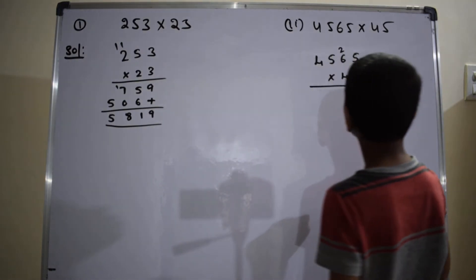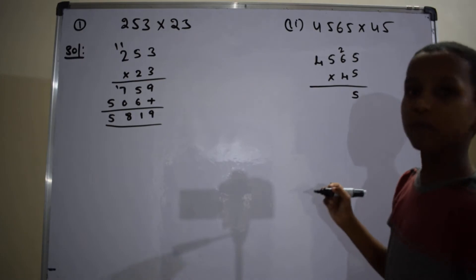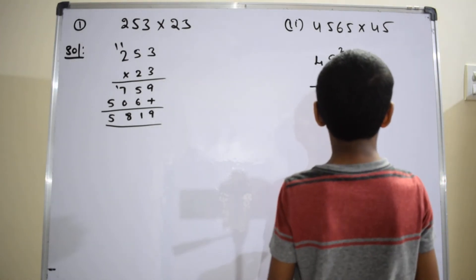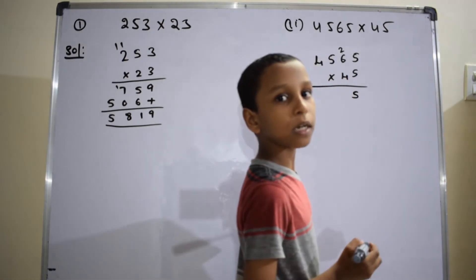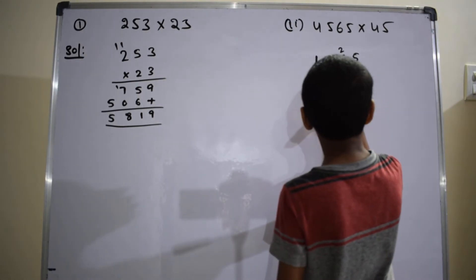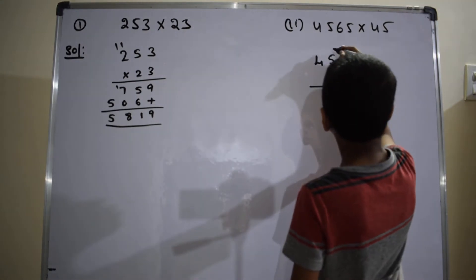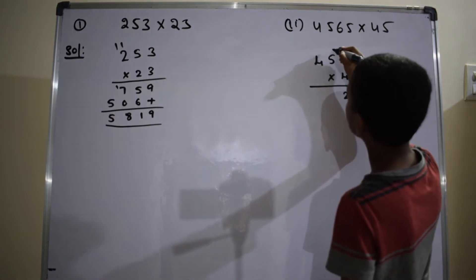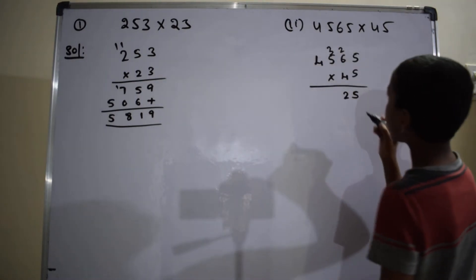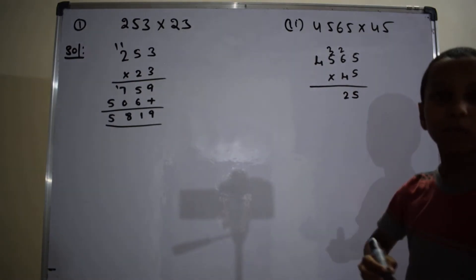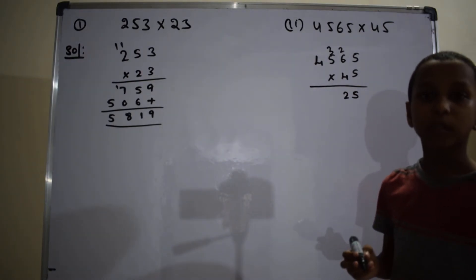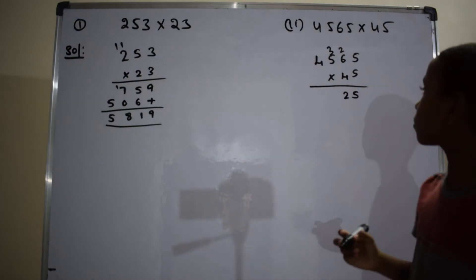2 is carried to the 6. 5 into 6 equals 30. 30 plus 2 equals 32, so right here 2. 3 is carried to the 5. 5 into 5 equals 25. 25 plus 3 equals 28.